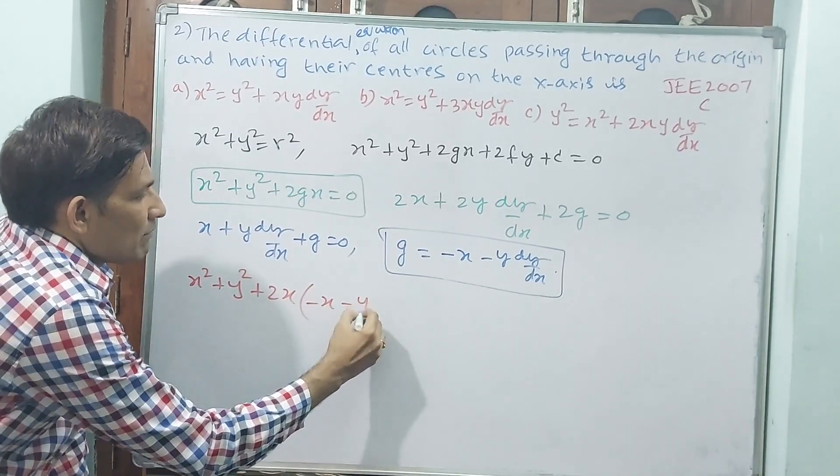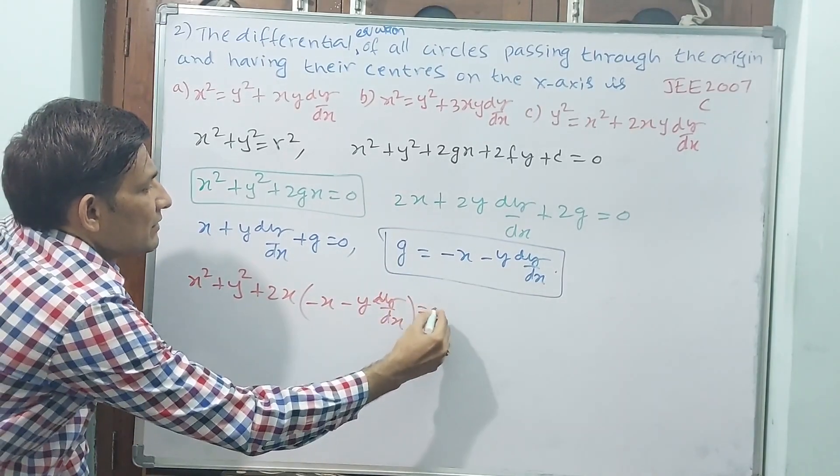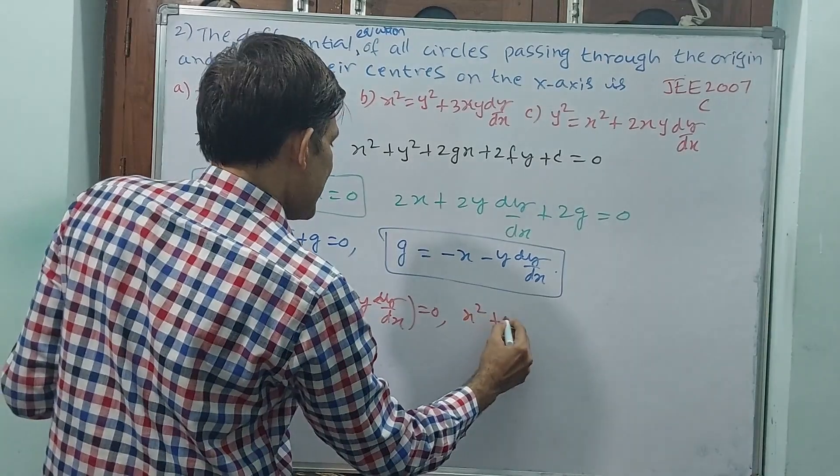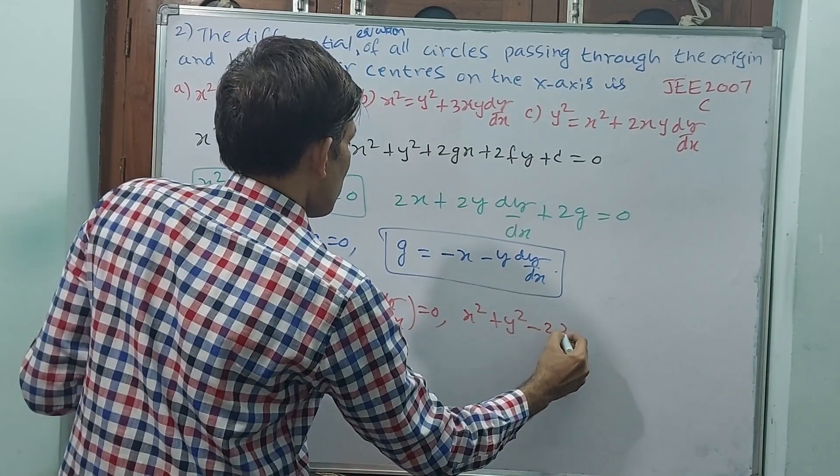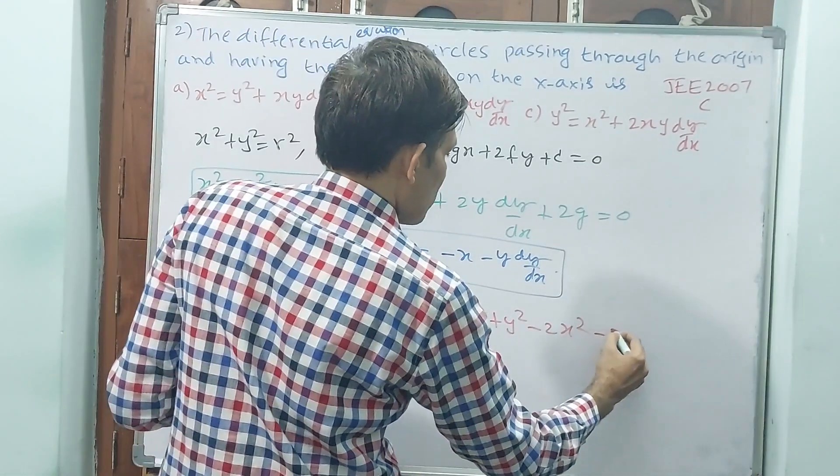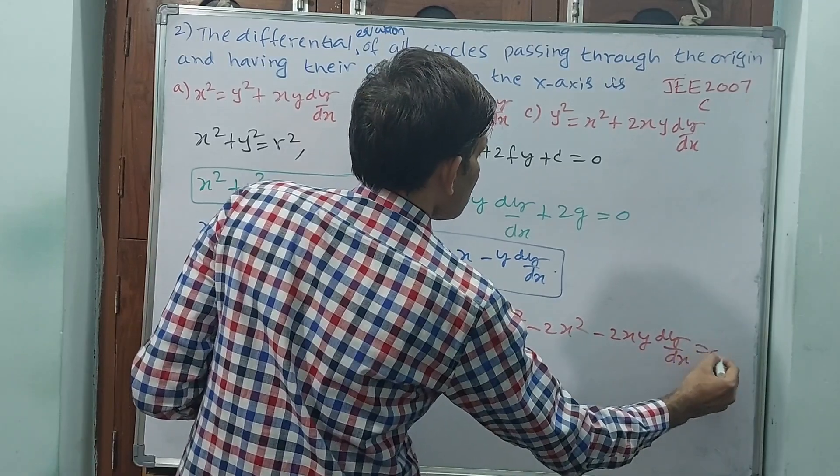equals 0. Now, you distribute the x inside. x² + y² minus 2x² minus 2xy dy/dx. Minus 2xy dy/dx is equal to 0.